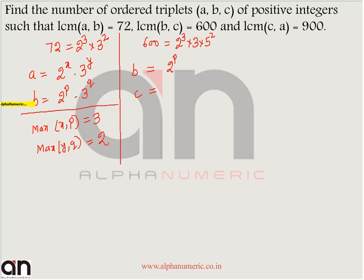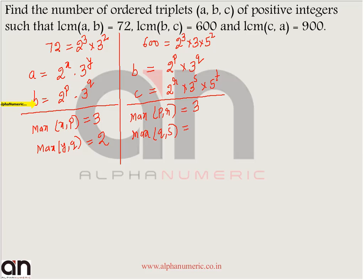So B is definitely 2 raise to power P into 3 raise to power Q. Similarly, C is equal to 2 raise to power R into 3 raise to power S into 5 raise to power T. One term must consist of the power of 5 and LCM of B and C is 600. From this, the maximum value among Q and S must equal 1, and T must equal 2 — there is no other possibility.